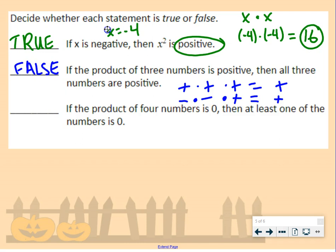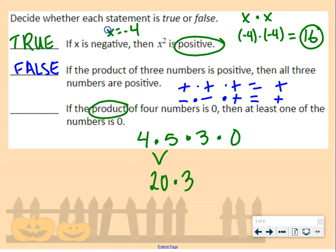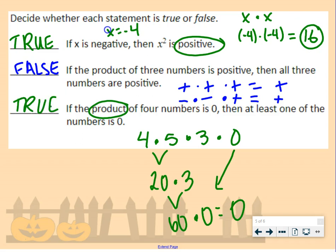Last statement: if the product of four numbers is zero, then at least one of the numbers is zero. That is the only way to get zero when multiplying — you must multiply by zero. For example, 4 times 5 times 3 times 0: 4 times 5 is 20, times 3 is 60, times 0 is 0. So at least one number must be zero. This is true.